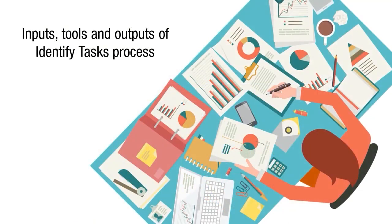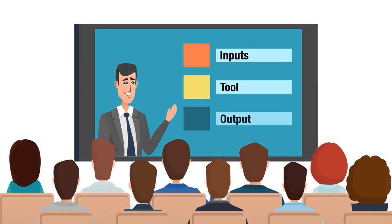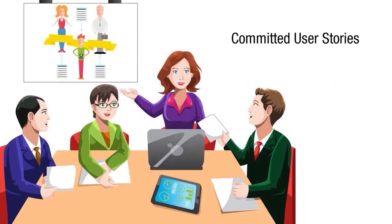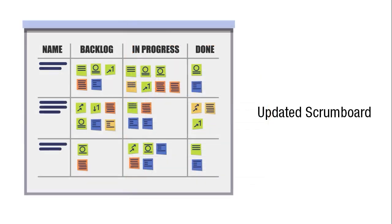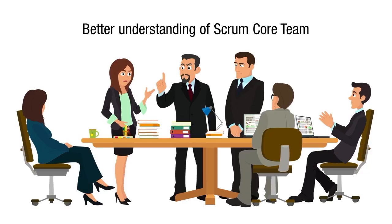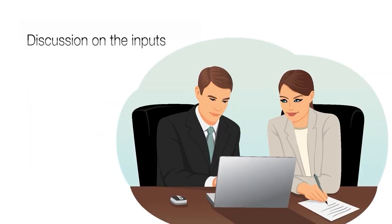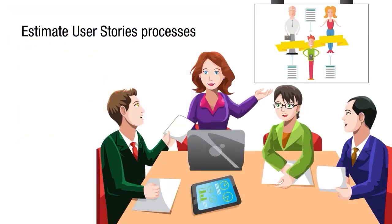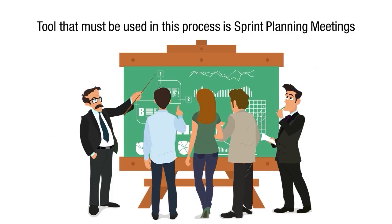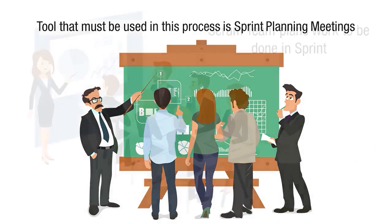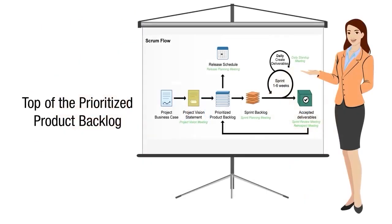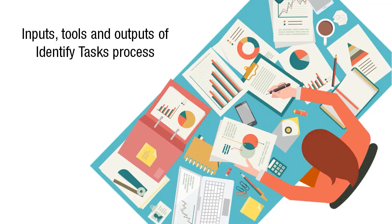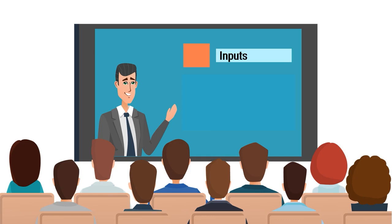Now let's discuss the mandatory inputs, tools, and outputs of the Identify Tasks process. The mandatory inputs are: Scrum Core Team, Committed User Stories, and User Story Acceptance Criteria. The mandatory tool is Sprint Planning Meetings, where the Scrum Team plans work by reviewing committed user stories. The product owner is present to clear ambiguities. This meeting is time-boxed to two hours per week of sprint duration, preventing discussions that belong in other meetings like release planning or sprint review.